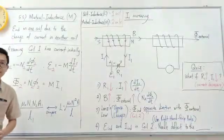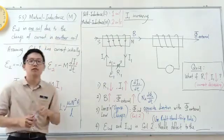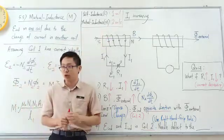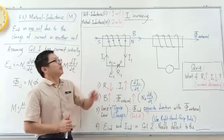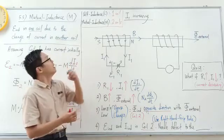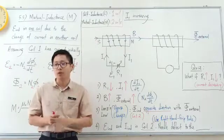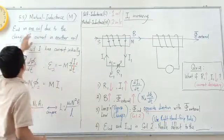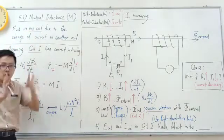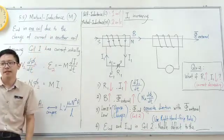We are in section 5.5 on mutual induction. Mutual inductance, as opposed to self-inductance which involves only one coil where EMF is induced due to the change of current in that same coil, mutual inductance involves two coils. Mutual inductance is when EMF is induced in one coil due to the change of current in another coil.